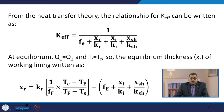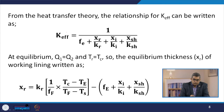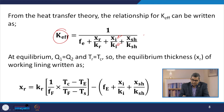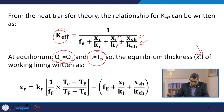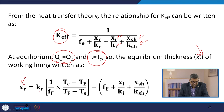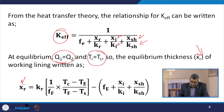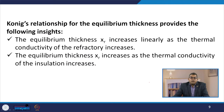If we plot temperature versus thickness, we observe a particular behavior of the curve. From heat transfer theory, the relationship of k-effectiveness can be written as: k-eff = 1 / (fe + xr/kr + xi/ki + xsh/ksh). At equilibrium, q1 equals q2 and tf,tr equals tc. The equilibrium thickness xr can be represented as: xr = kr × (1/ff) × (tc − te)/(tf − ts) − fe + xi/ki + xsh/ksh.